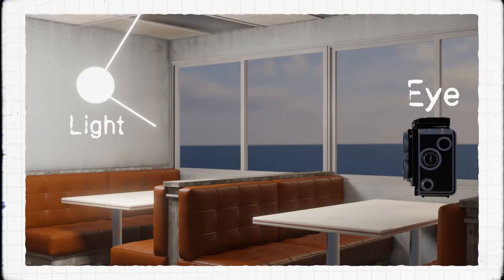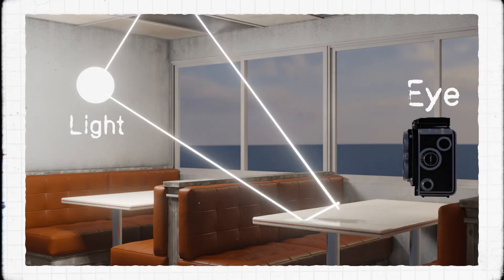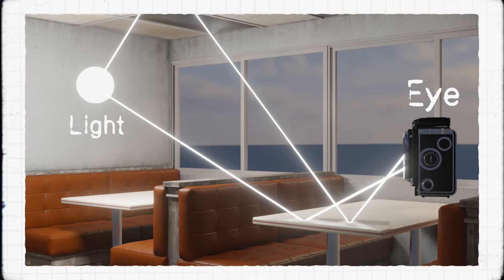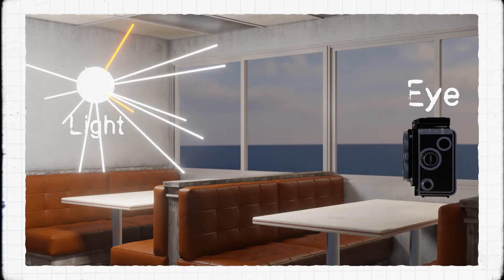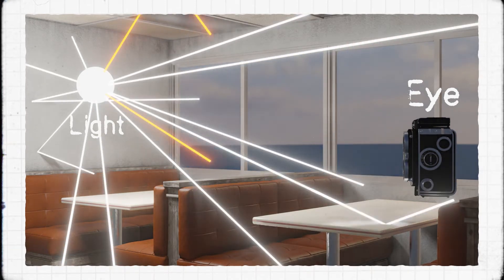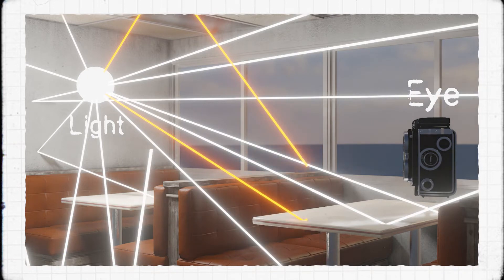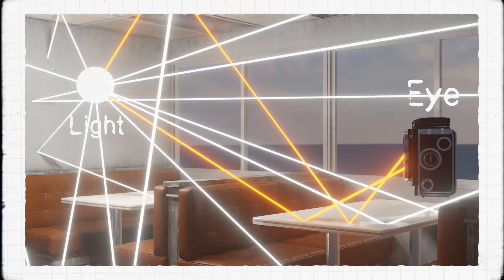In the real world, light rays or photons are emitted from a light source, and they bounce around different objects until some of them reach your eye. Out of the seemingly infinite number of photons emitted by a light source, less than 1% of those actually reach your eye, and that number gets much much smaller the further the light source gets.